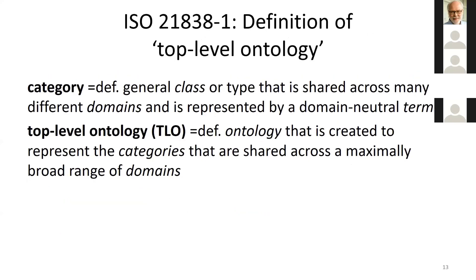We can define a category as being a very, very general class or type — that means domain neutral. So 'object' is domain neutral because it can be applied in any domain, whereas 'spider' is not domain neutral — it's very domain specific. Top level ontologies are only interested in domain neutral terms, which are terms that can be used precisely to unify a lot of ontologies of lower levels in the hierarchy.